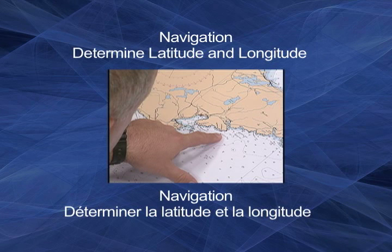The ability to correctly identify the latitude and longitude of a point or destination is an important skill. It can be used in many ways, such as setting a course, avoiding shoals or other dangers, and for identifying your speed or rate of progress on a voyage.